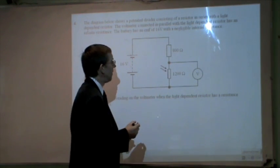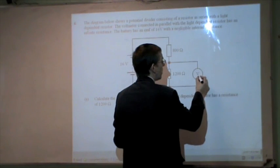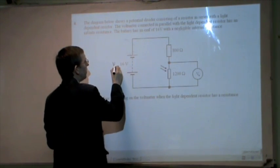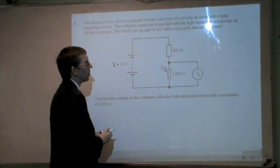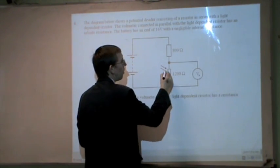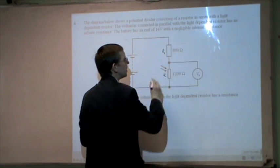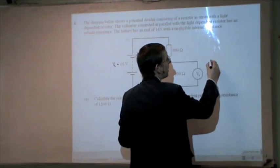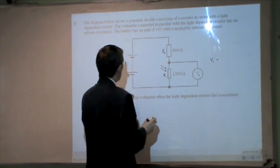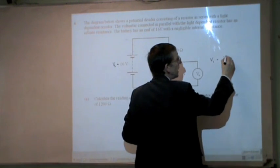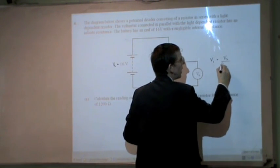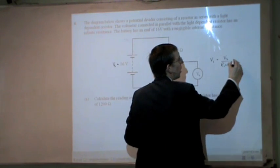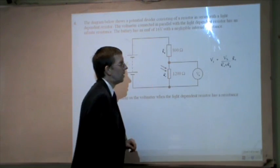So for the potential divider formula, if I call that V1 there, and this can be Vs for the source there, and we'll call this one R1 and that one R2, then my potential divider formula would be written as V1 equals Vs divided by R1 plus R2 multiplied by R1.